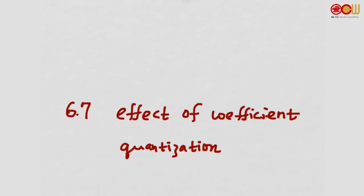Earlier, we talked about several different types of implementation for the same systems. But why do we want so many different structures, so many different implementations? If they all give us the same system function, why do we need so many? The reason is, in practice, they are all different. When we consider a practical system, the coefficients are quantized. When the coefficients are quantized, different structures will give rise to different system functions.